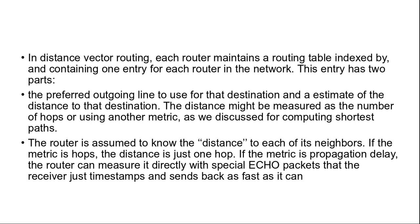Router is assumed to know the distance to each of its neighbors. If the metric is hop, the distance is just one hop. If the metric is propagation delay, the router can measure it directly with special echo packets that the receiver just timestamps and sends back as fast it can.